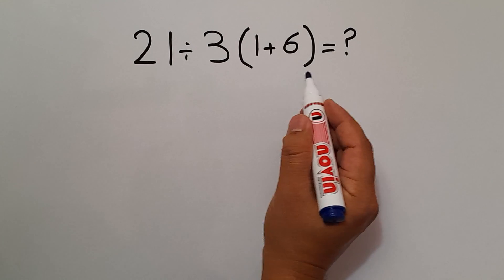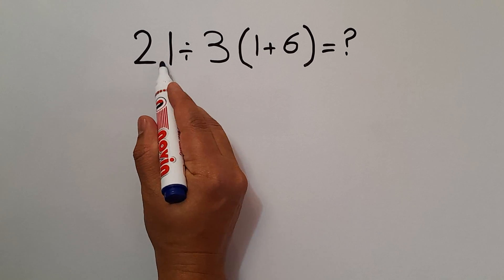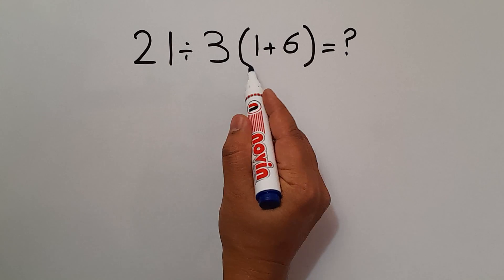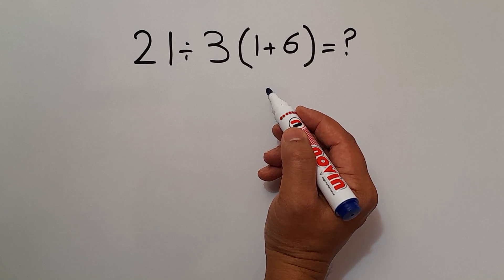Hey guys, welcome to MathJoy. In this video, we want to find the value of this expression: 21 divided by 3, then times 1 plus 6. Are you ready to solve? Let's go ahead and get started.